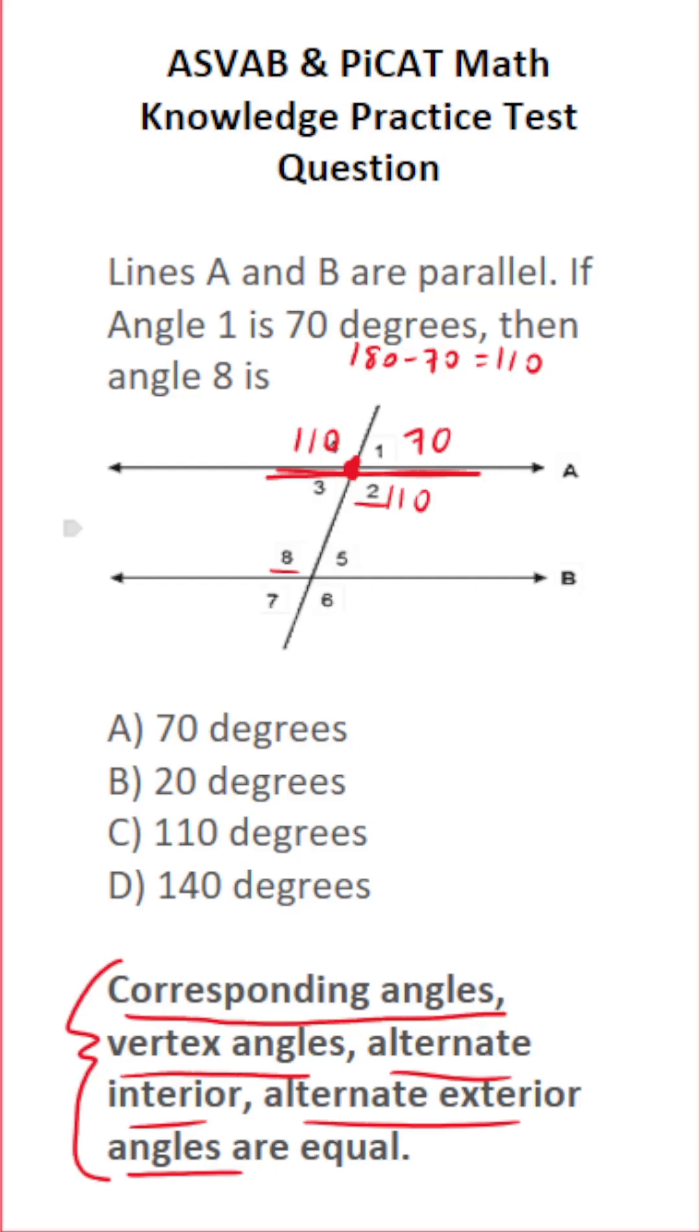And angle 2 and angle 8 are alternate interior angles, so they're also going to be equal. So if angle 2 is 110, angle 8 is also 110. So just like that, using these definitions, I know that the correct answer is C, 110 degrees.